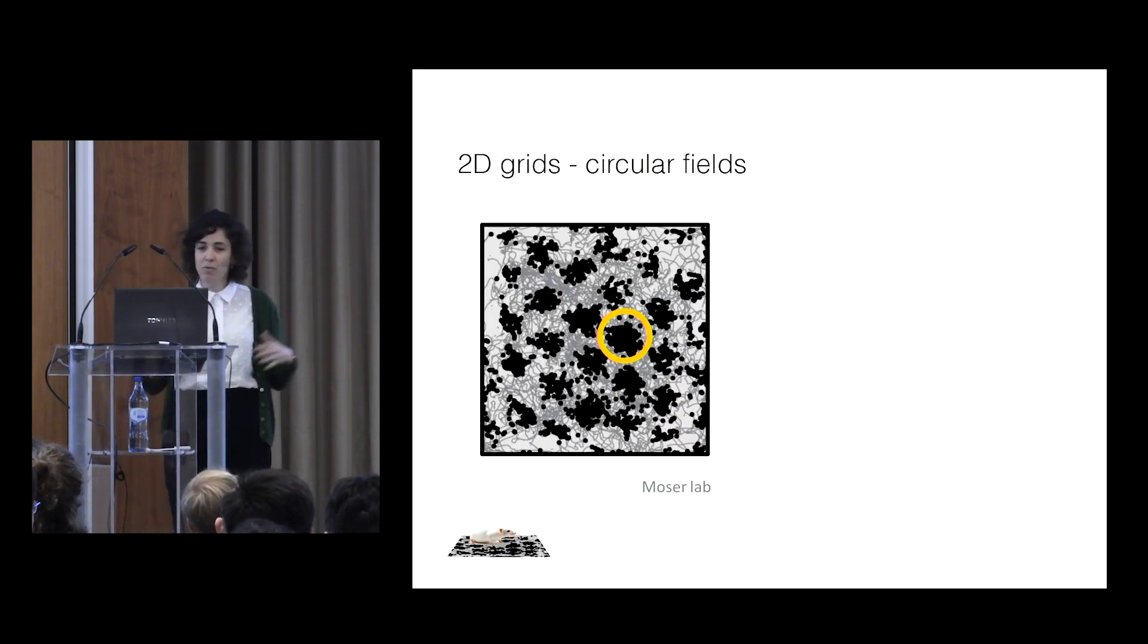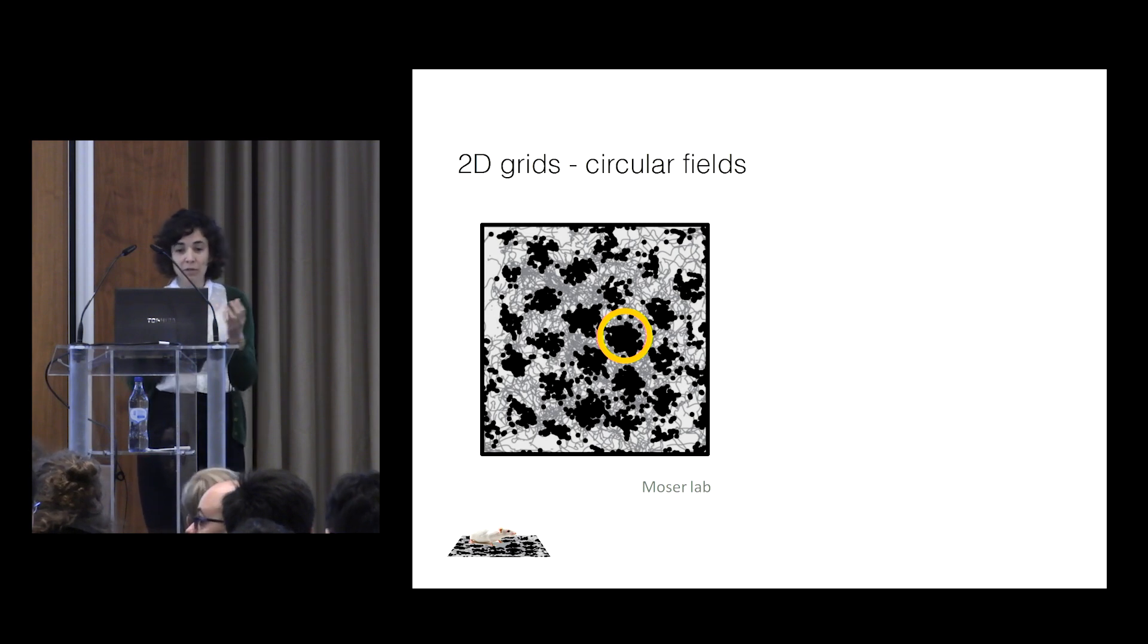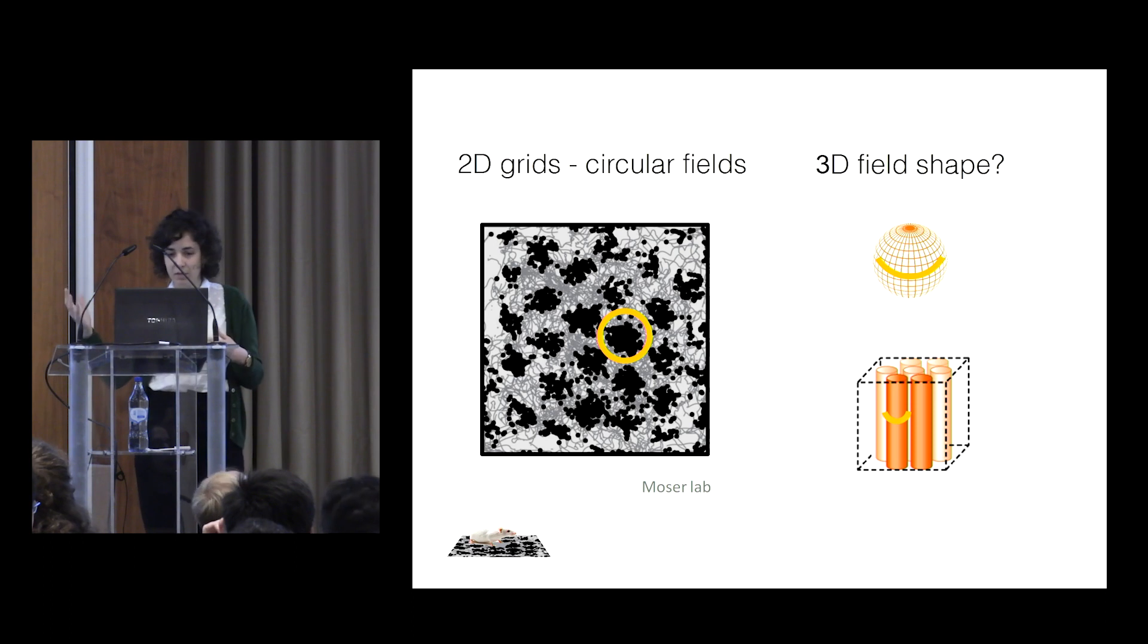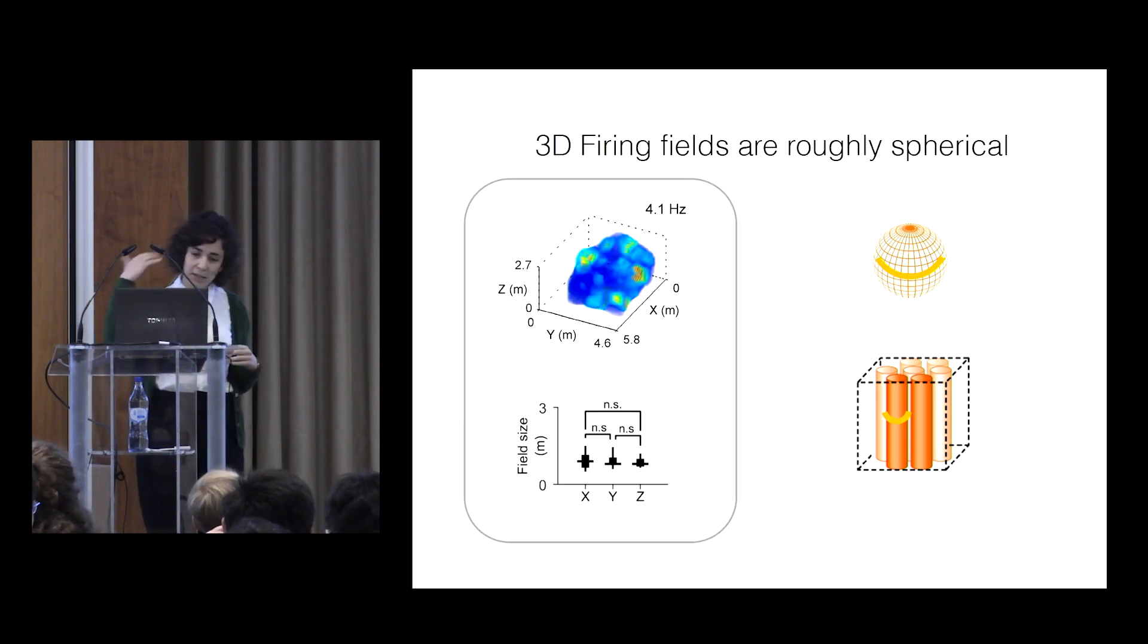The first most basic one is the 2D grid cells have roughly circular fields. What would it look like in 3D? Would it be spherical? Would it be more elongated?